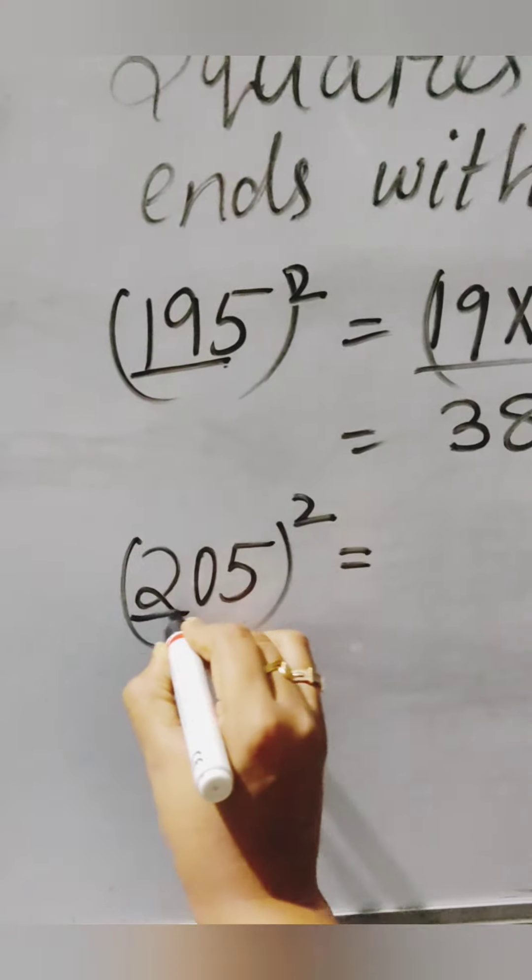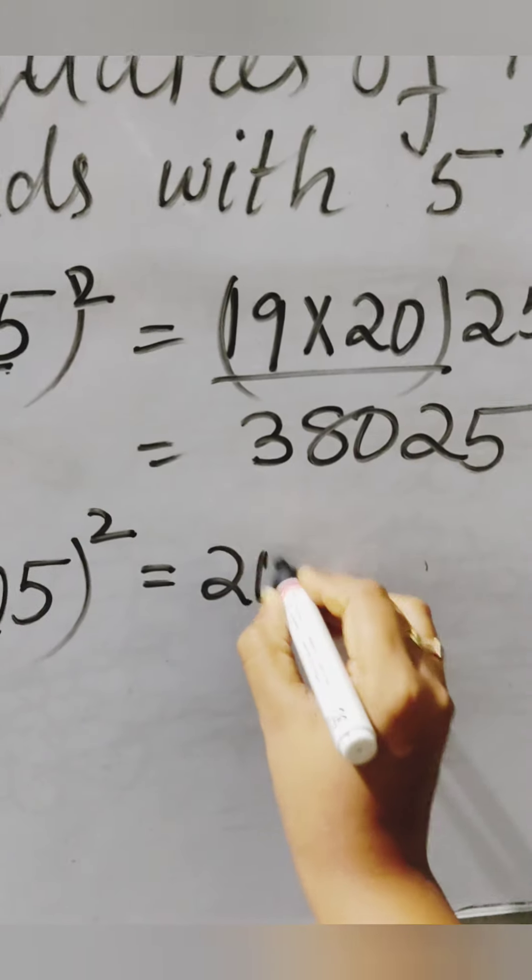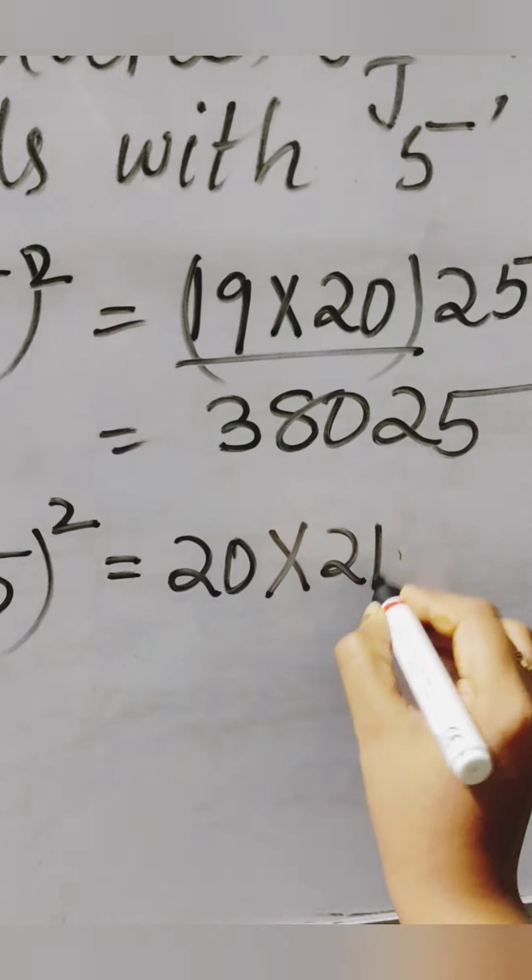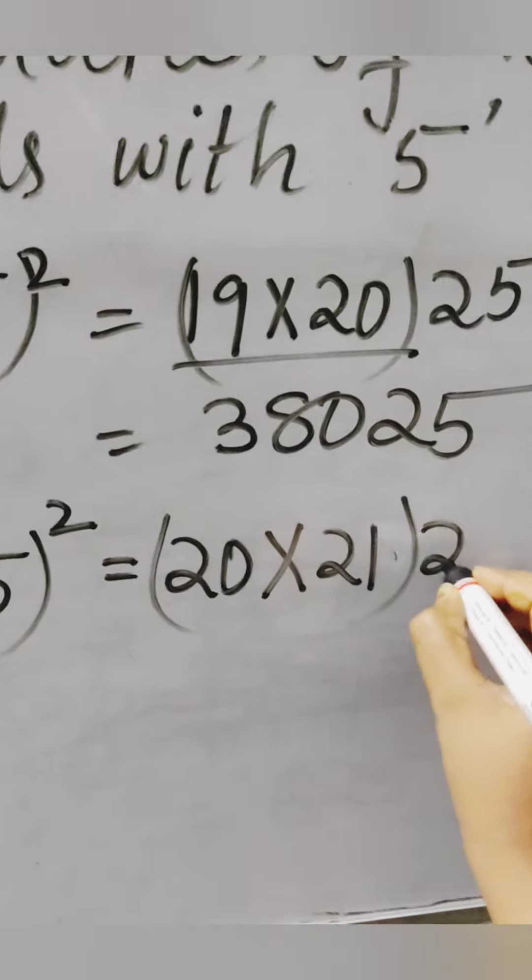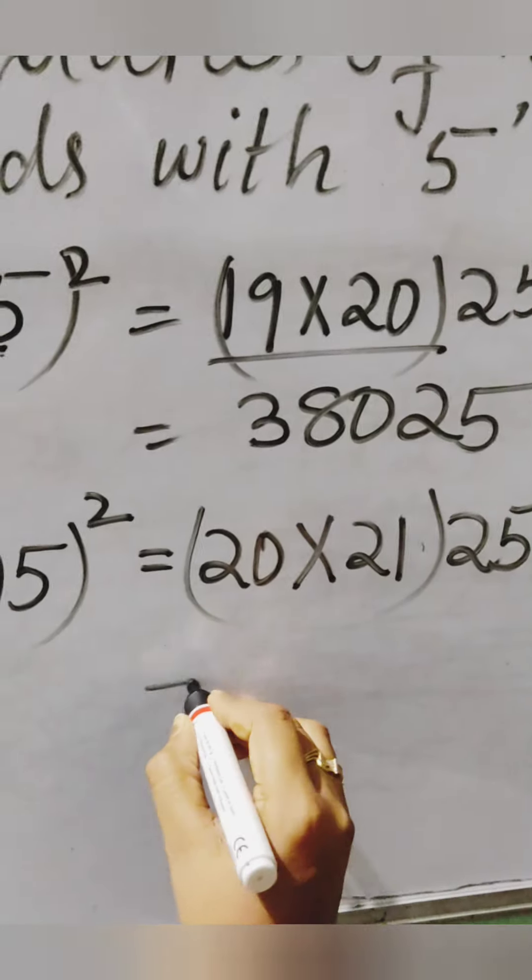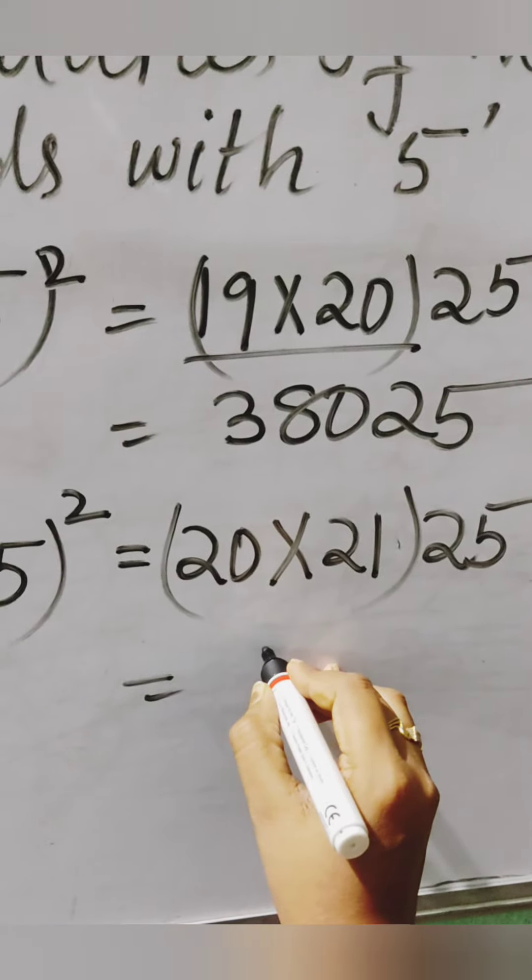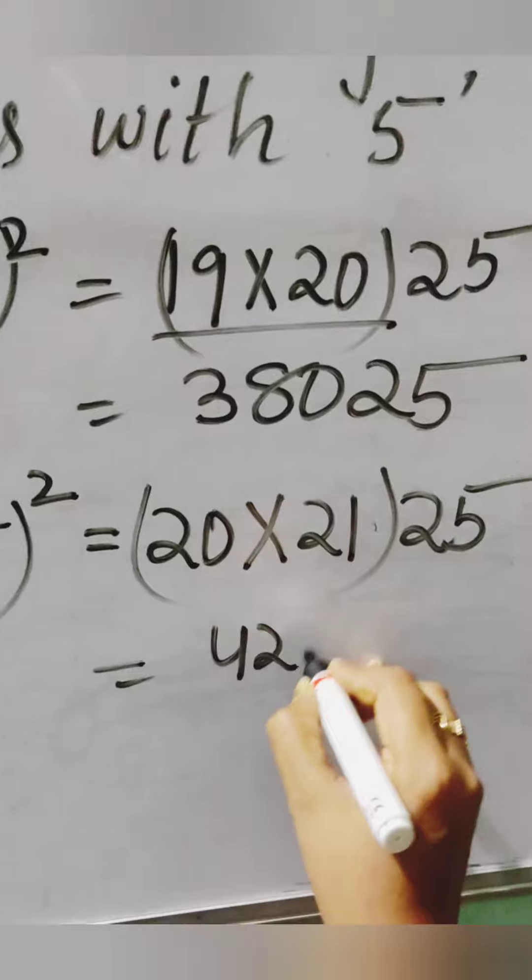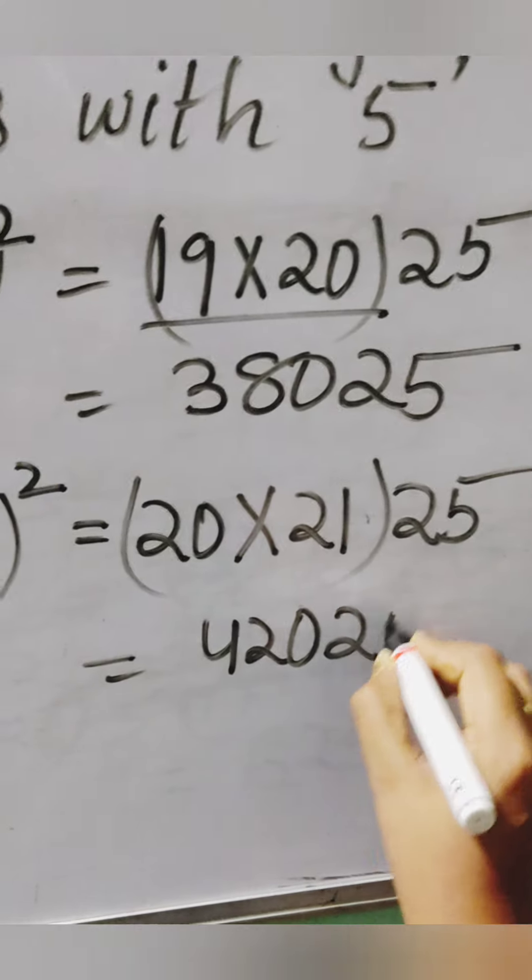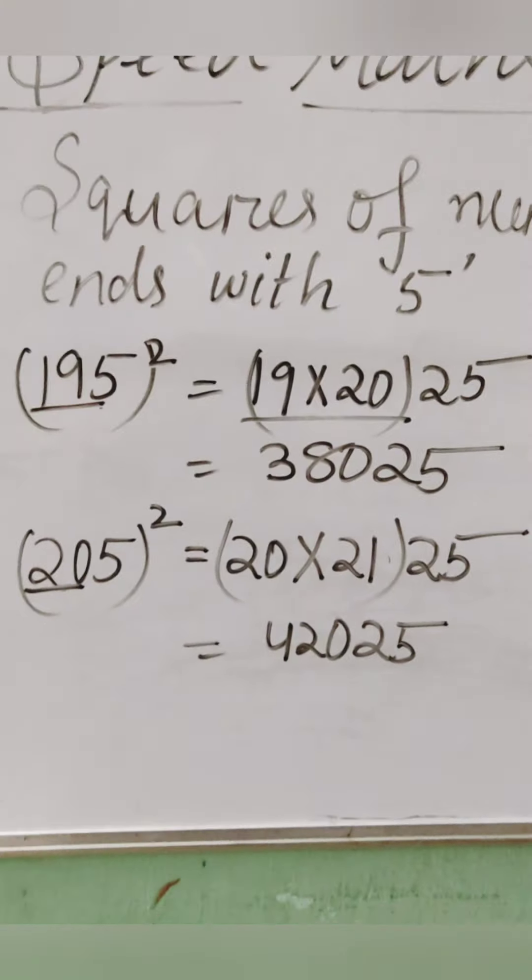Similarly, 205 squared. Hide the ones place digit, that is 5. You can get the number as 20. After 20, 21 will come, and write down 25 nearby it. So multiply these two numbers. You will get 42,025.